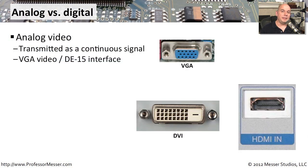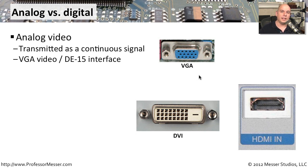Video signals may be sent from a computer to a display in different ways. One way is via an analog signal. A VGA display sends a simple continuous analog signal from the computer to the monitor. If you have a very long VGA cable, you may notice ghosting on the picture because some of that analog signal is lost between the computer and the display. This is transmitted via the VGA interface, also known as the DE15 interface.